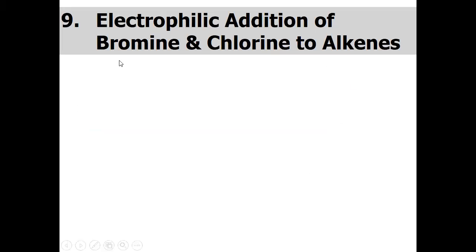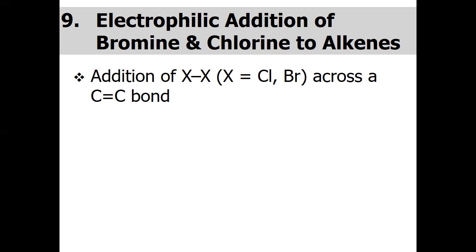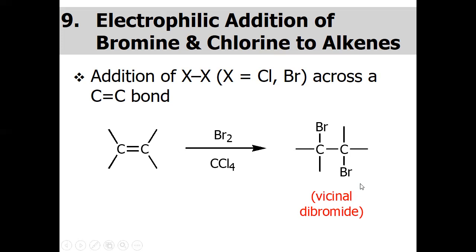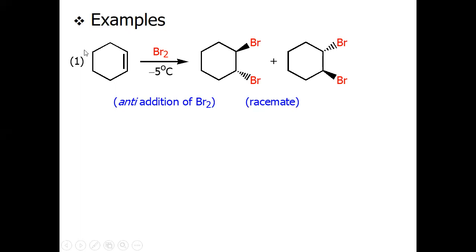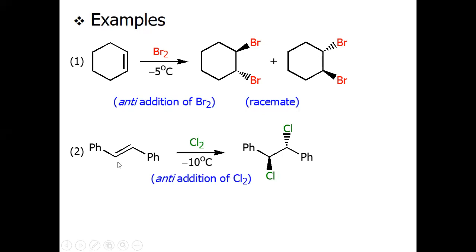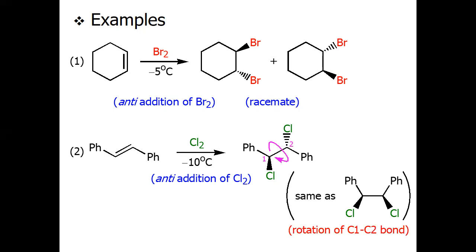Let's start with the electrophilic addition of bromine and chlorine to alkenes. Addition of halogens across a double bond gives you a vicinal dihalide. For example, with cyclohexene, once we add bromine across the double bond it gives a racemic mixture because the central carbon is a chiral molecule. Similarly, with 1,2-diphenylethane and chlorine we get 1,2-dichloro diphenylethane, and if we rotate this molecule we have the same structure.